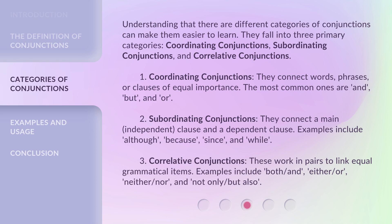Three: Correlative conjunctions — these work in pairs to link equal grammatical items. Examples include: both/and, either/or, neither/nor, and not only/but also.